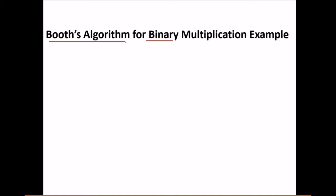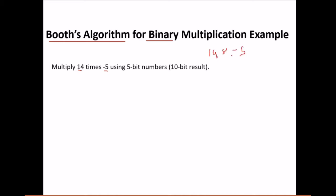Let us see how it works. We have to multiply 14 with minus 5. These are 5-bit numbers because 14 and 5 can both be represented in 5 bits, and the result will be a 10-bit number. So we are going to compute 14 times minus 5 in binary — please watch carefully because these are the two numbers we are going to work with.